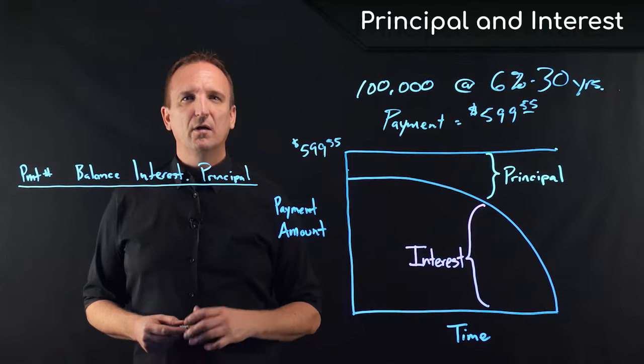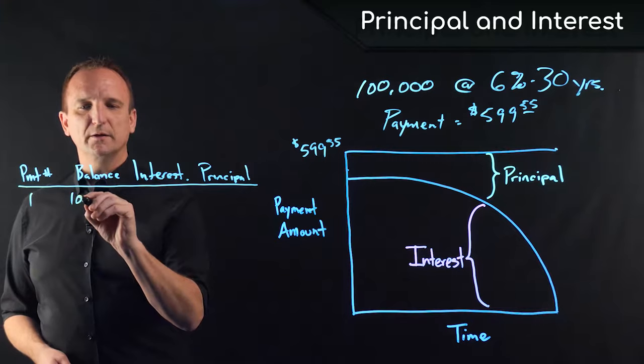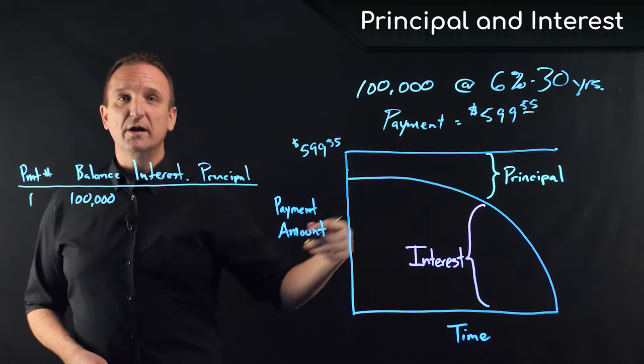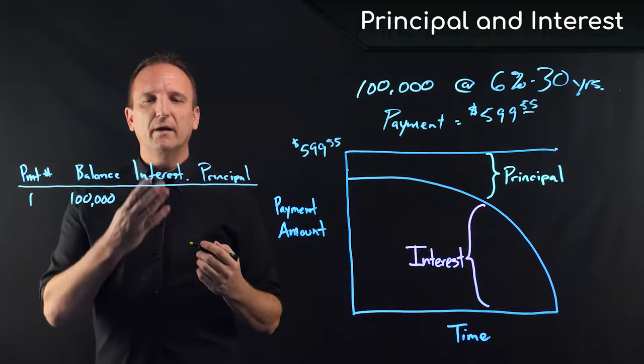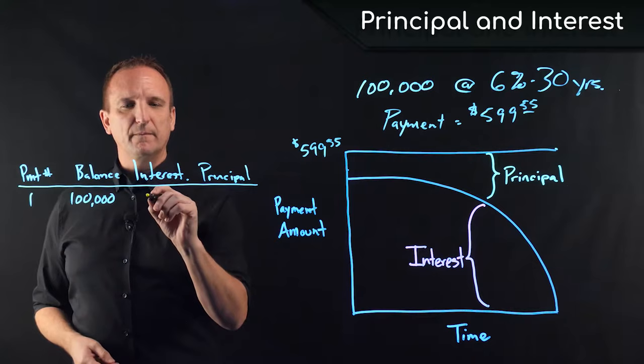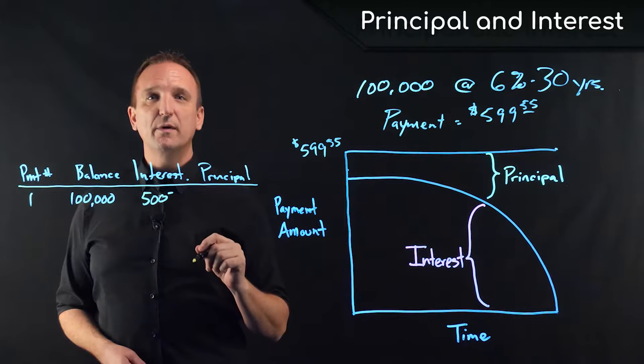With the first payment, when our balance on the loan is $100,000, 6% interest per year equals 0.5% per month. So each month we are paying 1.5% interest on the current balance. So on the very first payment, that 1.5% interest is $500, which means that the remainder of the payment, $99.55, goes toward principal.